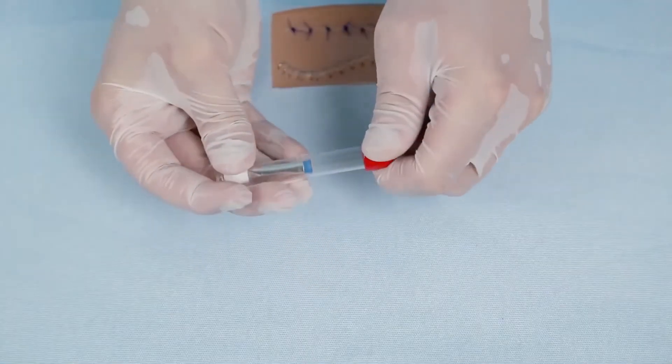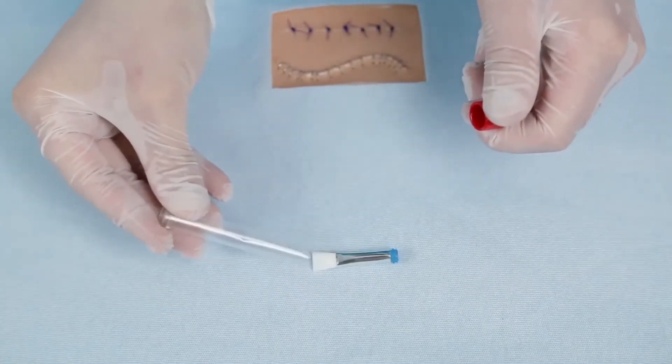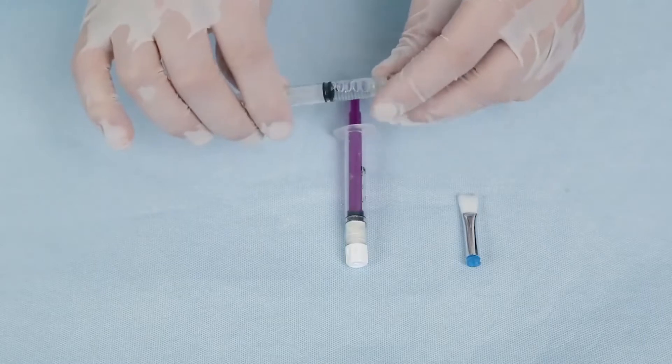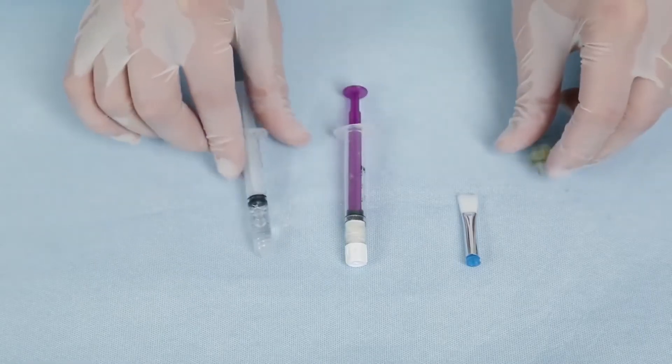Remove the sterile application brush from the brush case and have it ready for use. Remove the caps from the two syringes and connect them together.